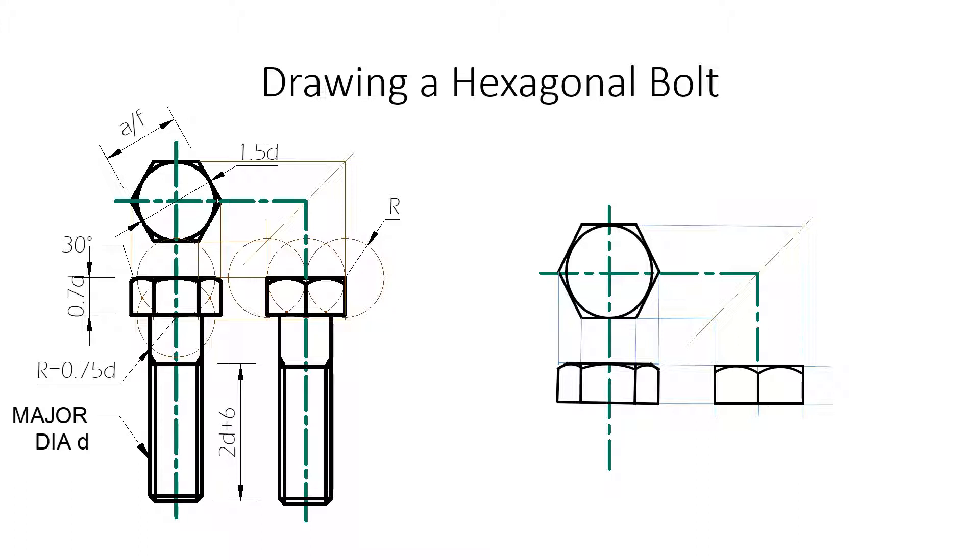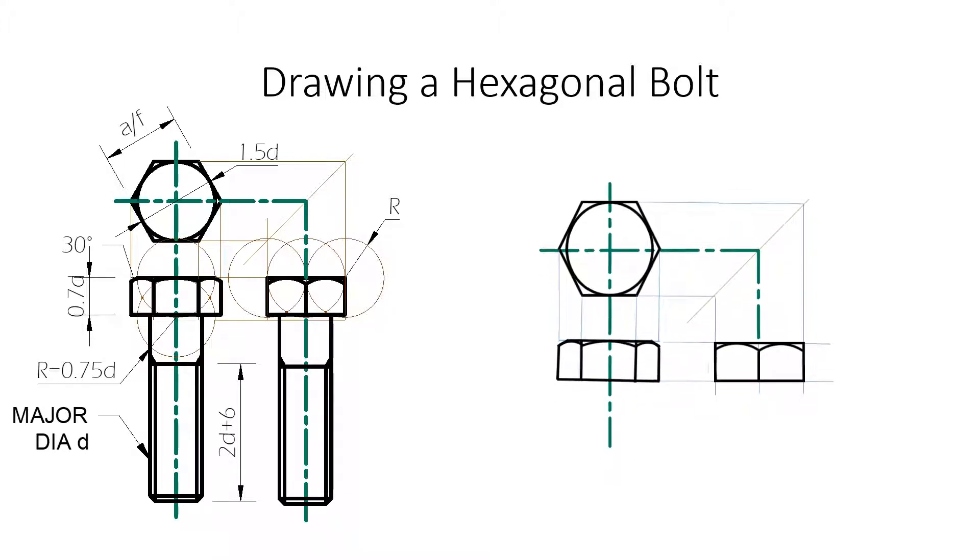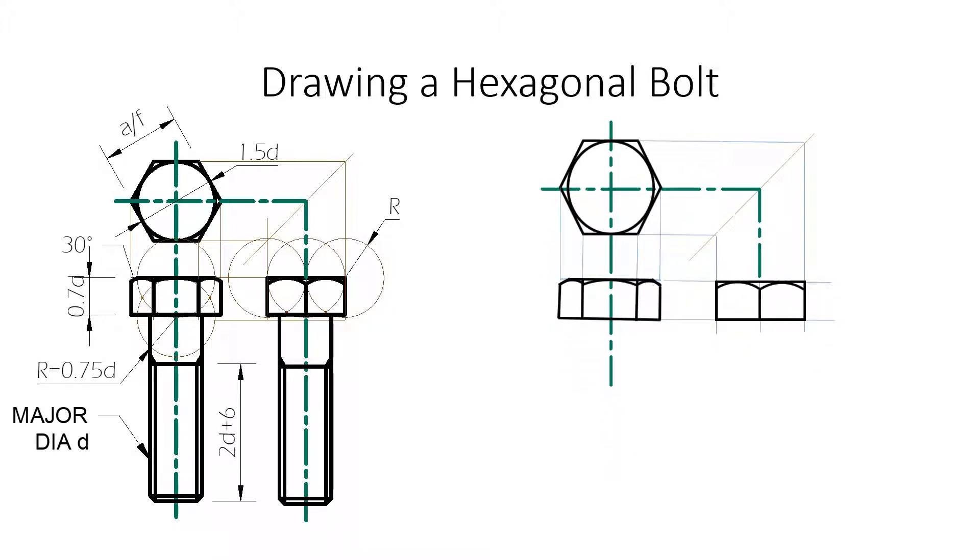Now, in AutoCAD, we just turn off the layer. So, it's there if you want to bring it back, but we don't need it now. What we're going to do now is the shaft. So, let me just make some room there.